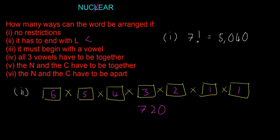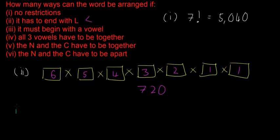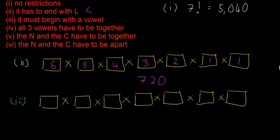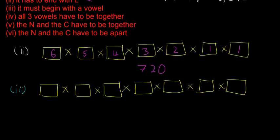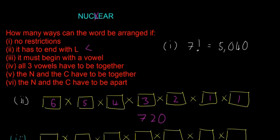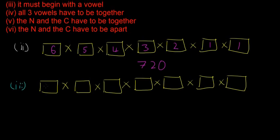Next, part three: it must begin with a vowel. We draw seven boxes again. There are three vowels in 'nuclear' — U, E, and A — so the first box has three options because it can be any one of those three vowels.